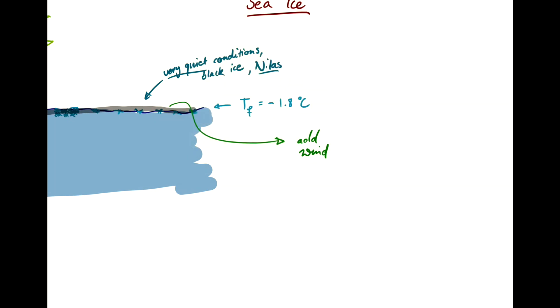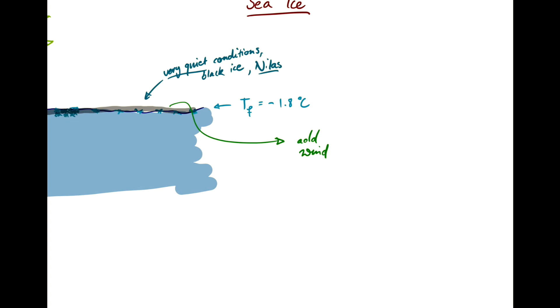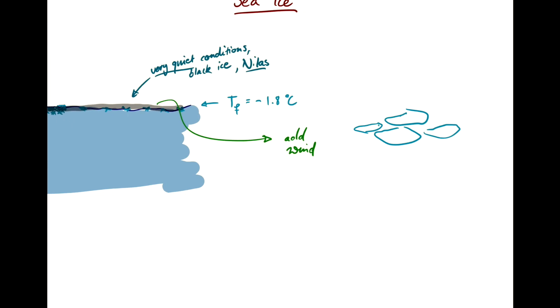And instead of a very thin layer of uniform ice, you get little chunks of ice that start to grow, that are being pushed around by the winds and currents, and they bump into each other.